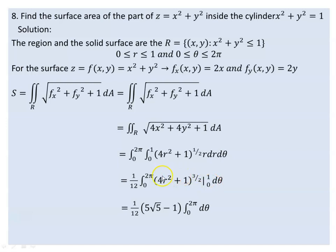We have 1/12 outside, and the integration of dθ from 0 to 2π evaluates to 2π, since 2π minus 0 is 2π. So 1/12 times 2π gives π/6, and the surface area of this paraboloid inside the cylinder is π/6 · (√5 − 1).